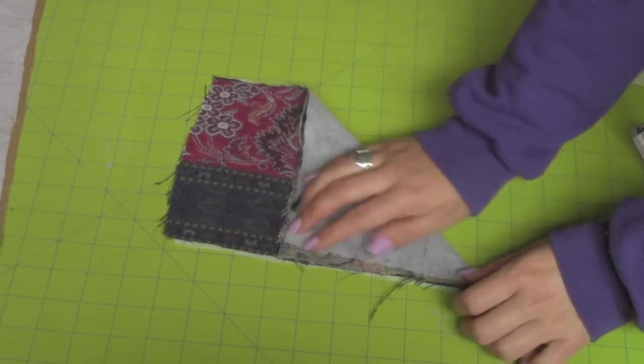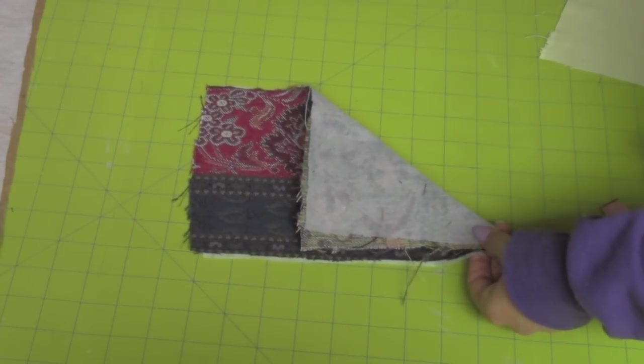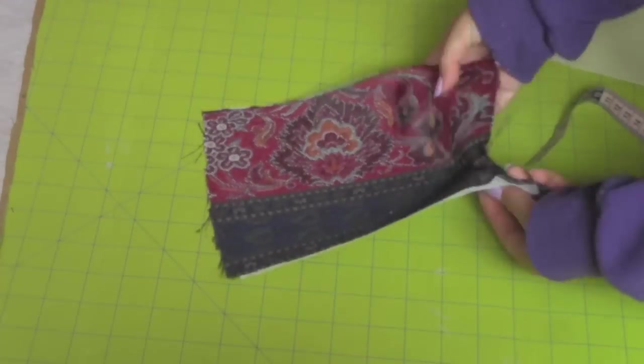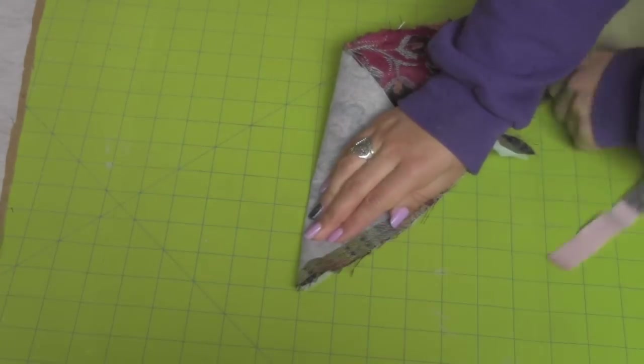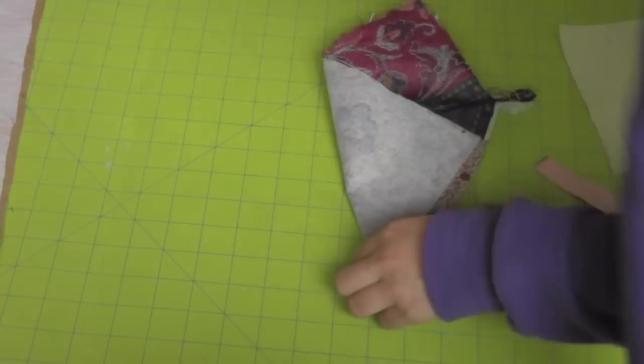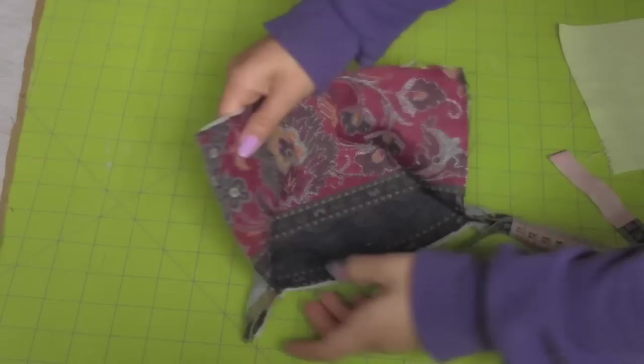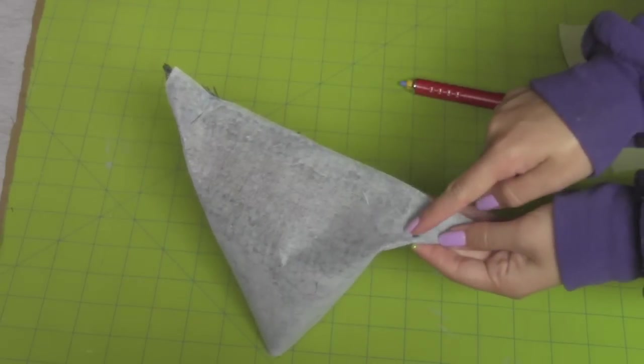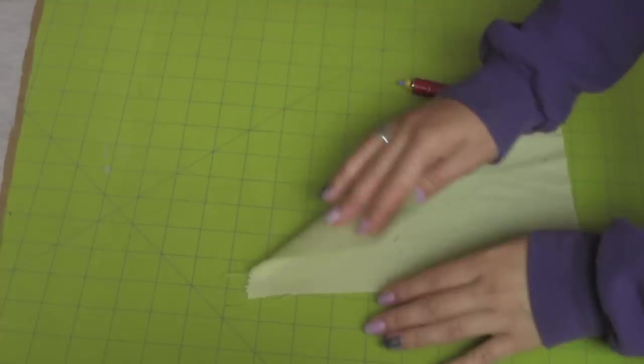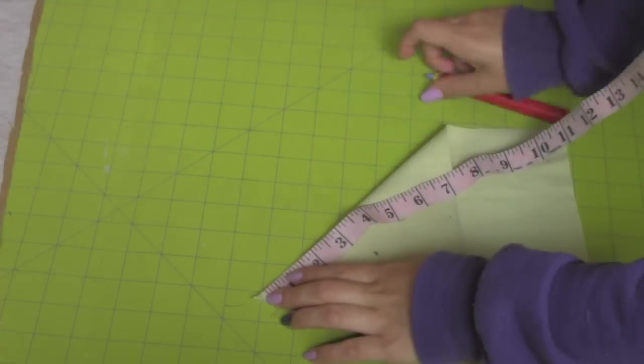Now I'm taking the top corner of all the pockets and bring it down to the bottom to form a triangle. Mark an inch and a half line at the bottom of both corners to create depth in the pockets. Sew on the lines you created. Do the same step on the lining of the pockets.